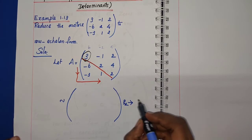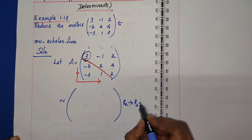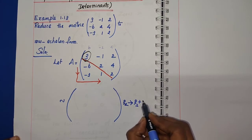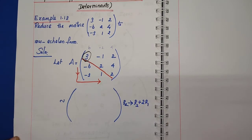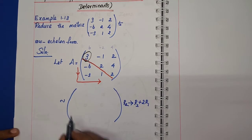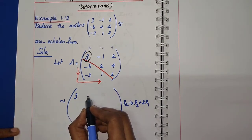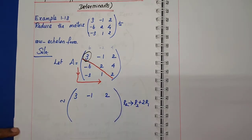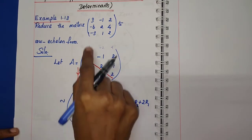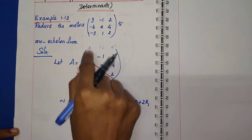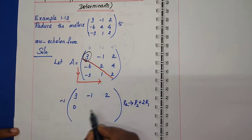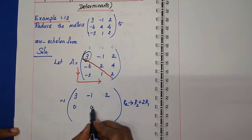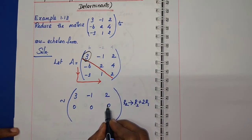R2 implies R2 plus 2R1. R1 first update is 3, -1, 2. You can use pencil to multiply by 2. Now add this number to R1. -6 plus 6 is 0, 2 minus 2 is 0, 4 plus 4 is 8.